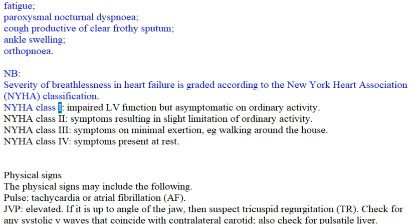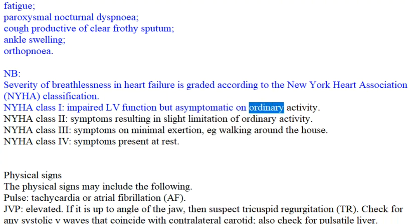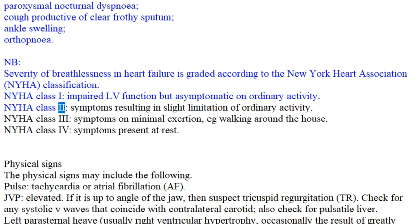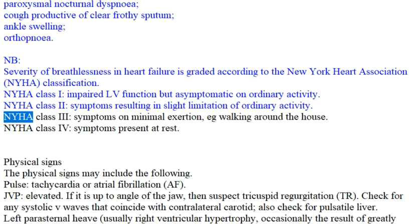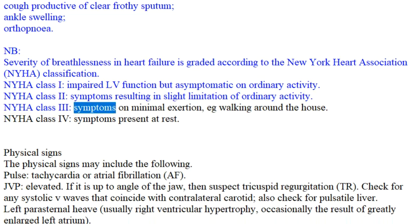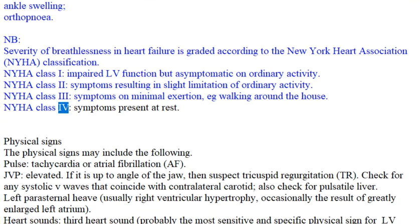NYHA Class I: impaired LV function but asymptomatic on ordinary activity. NYHA Class II: symptoms resulting in slight limitation of ordinary activity. NYHA Class III: symptoms on minimal exertion, e.g., walking around the house. NYHA Class IV: symptoms present at rest.